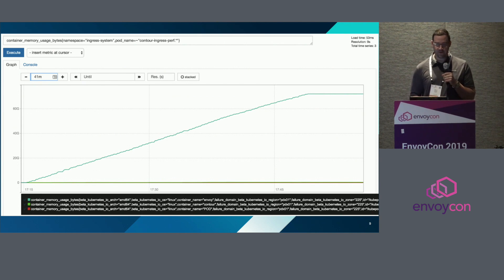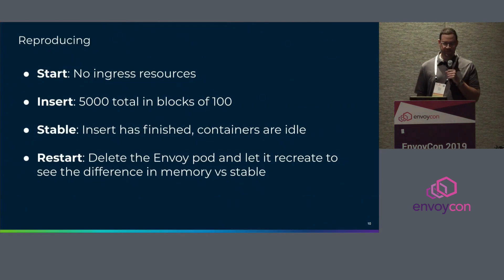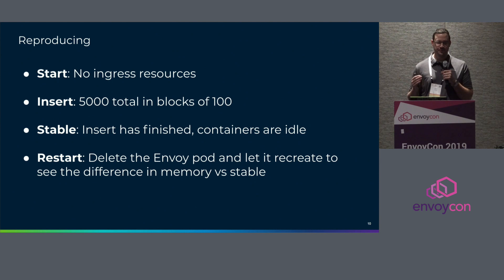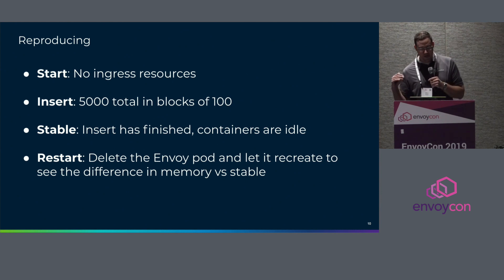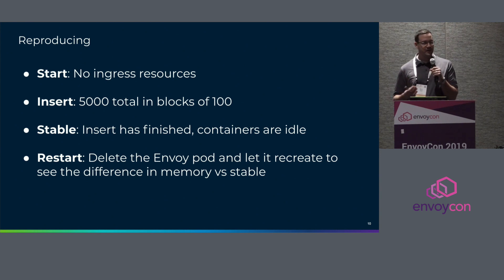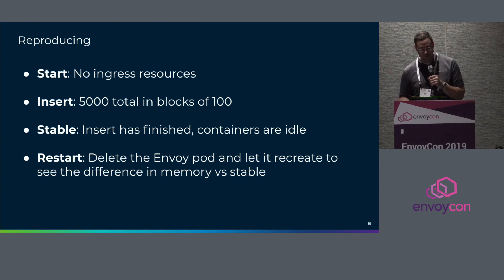If you're using 70 gigs of memory in your cluster just for Envoy, that's a pretty big cost. So here's how we reproduced it: we started out in a cluster with zero ingress resources, then inserted 5,000 total in blocks of 100. After a while we saw memory grow, and we let the cluster stabilize. After it got idle, we marked down how much memory got used, then restarted the Envoy pod. What we wanted to see was on a cold start with 5,000 objects, what was Envoy's memory consumption versus having it get configured as we went.